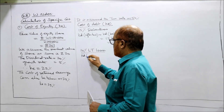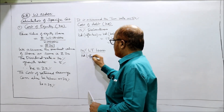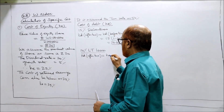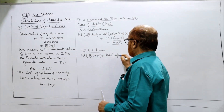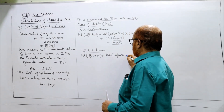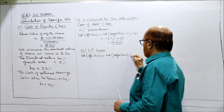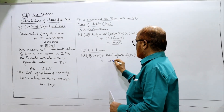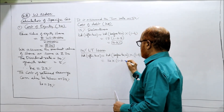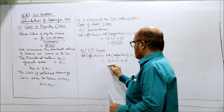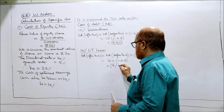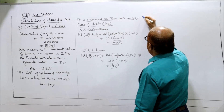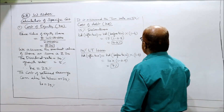KD after tax for 14% long term loan is equal to KD before tax into 1 minus T, that is 14 into 1 minus 0.5, that is equal to 7%. Now we can compute the WACC.